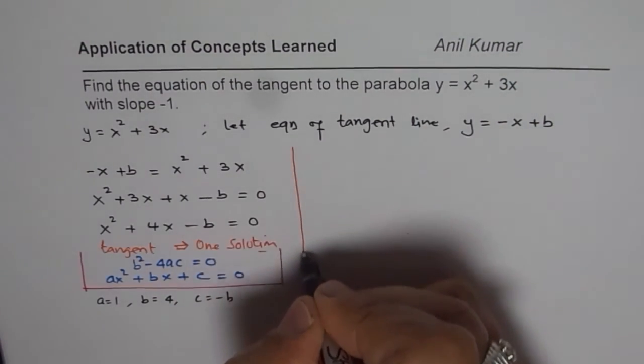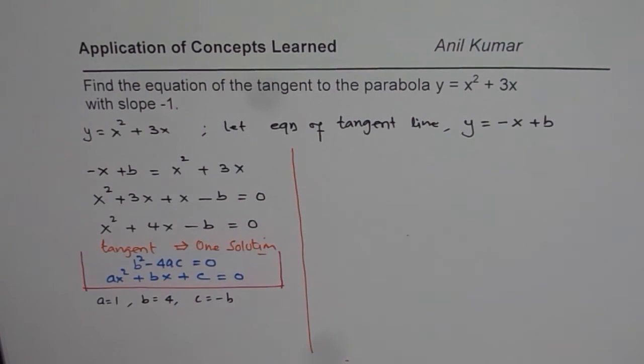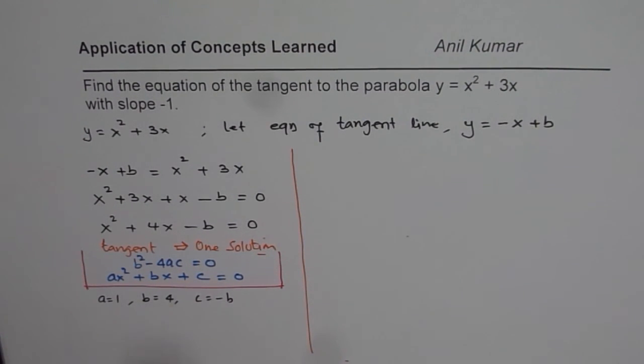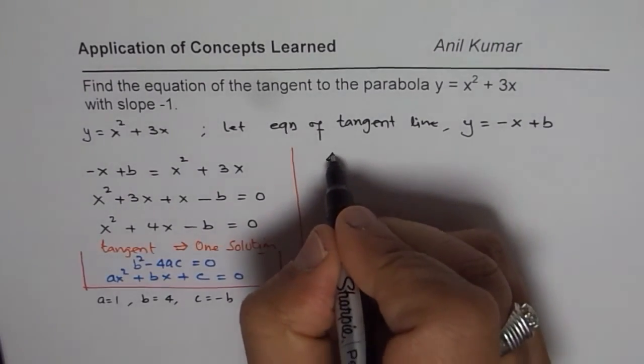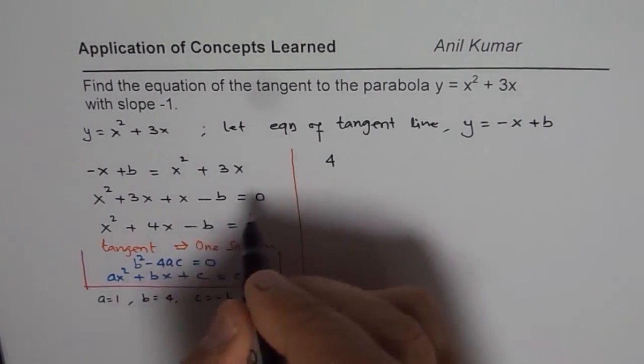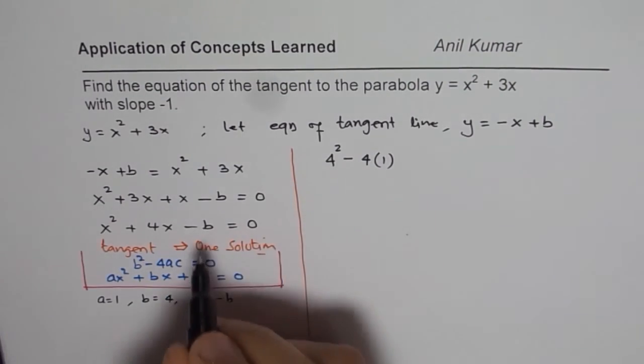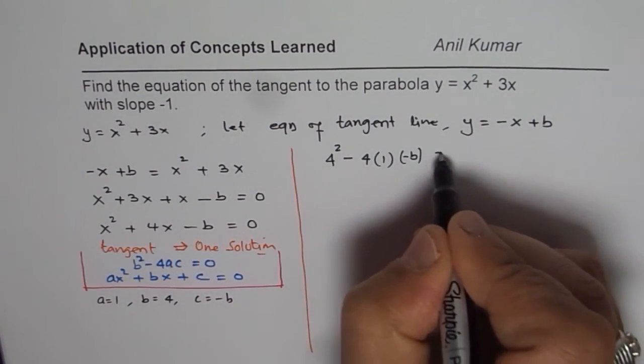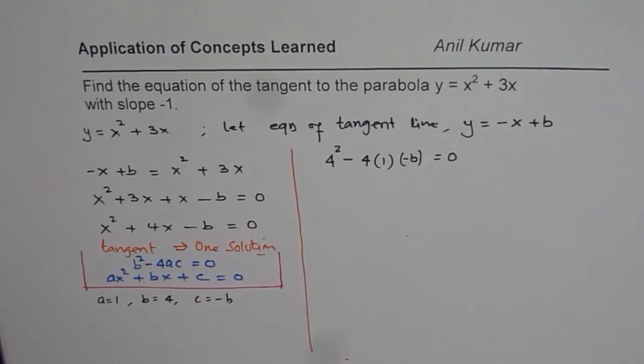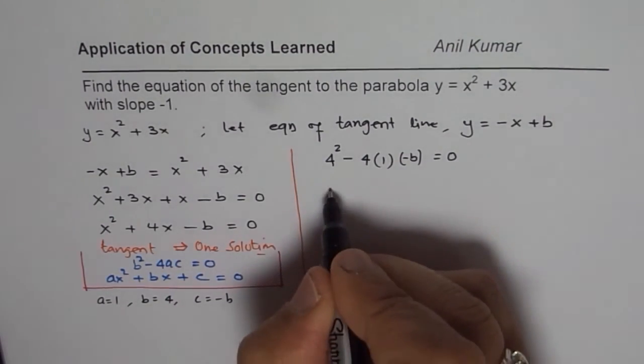Now, we will find the value of b by equating b square minus 4ac as equals to 0. So, that means, if I say b square minus 4ac, that means 4 is my b. So, 4 square minus 4 times a is 1 and c is minus b. That should be equal to 0. You get the idea.